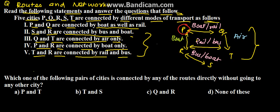Now the next part is: which one of the following pairs of cities is connected by any of the routes directly without going to any other city? From these four options we need to find which are directly connected without going to any other city.